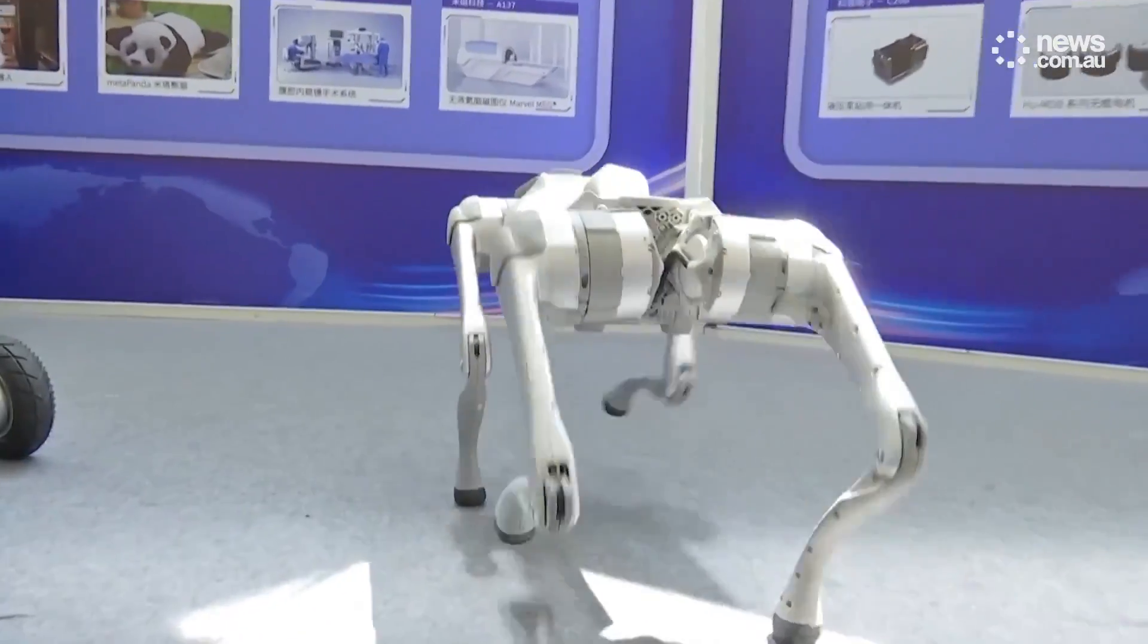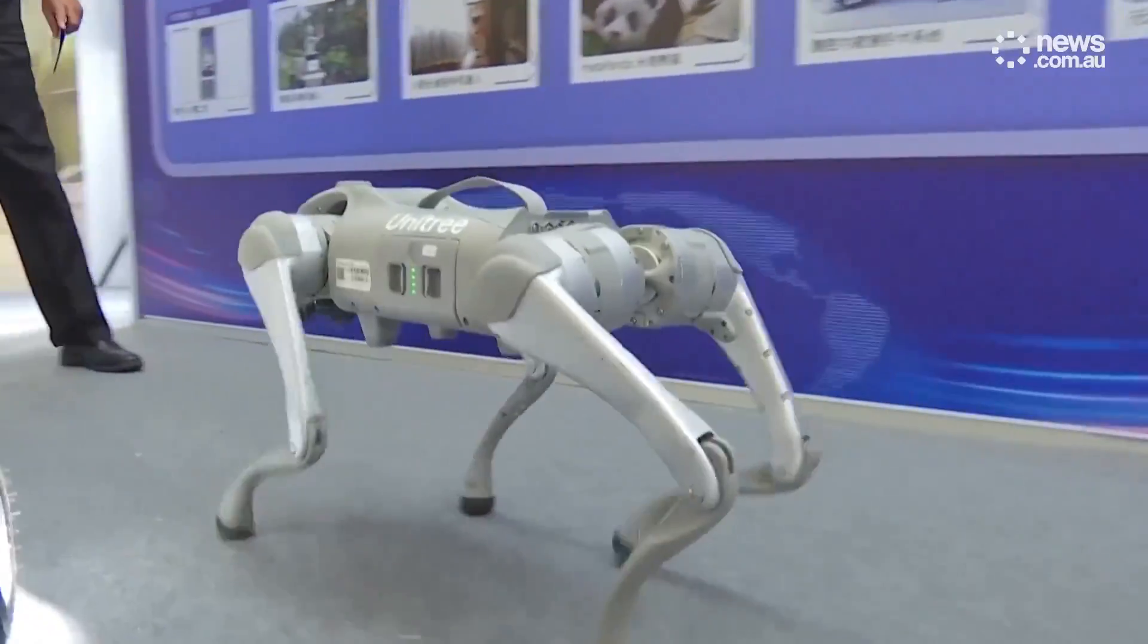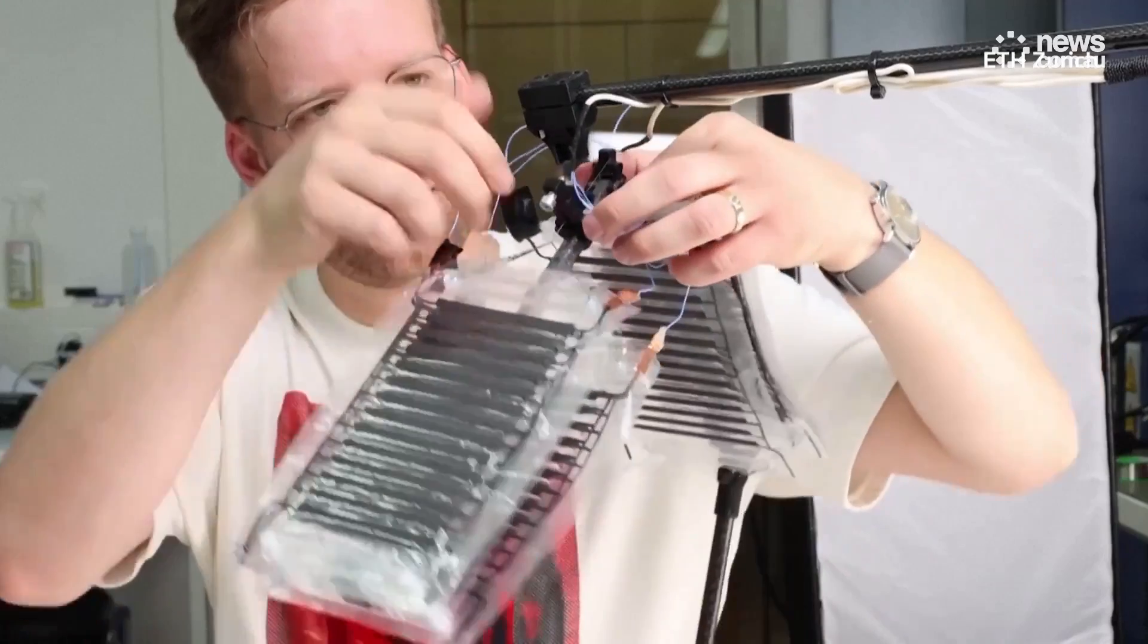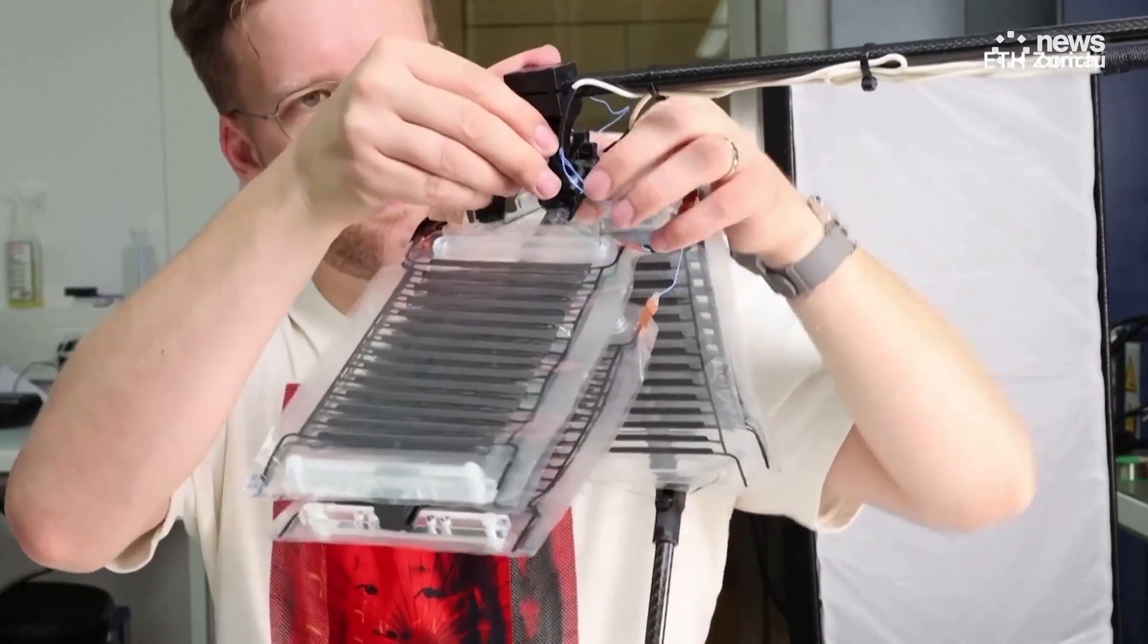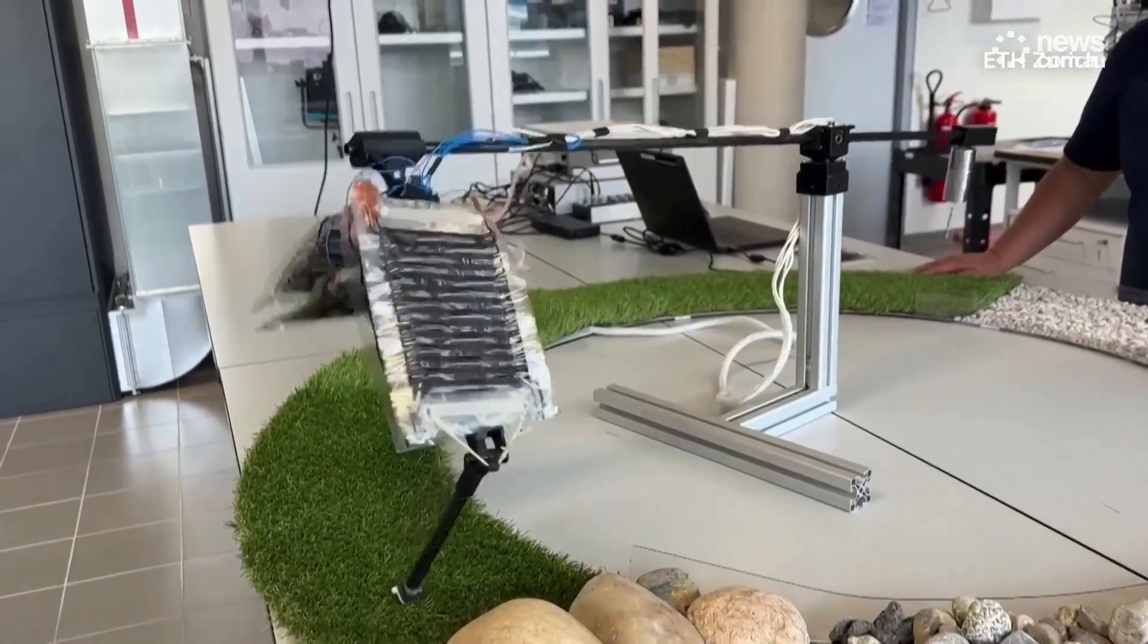Traditional robots typically employ motors to power their movements. Instead, this robotic leg uses artificial electro-hydraulic muscles to mimic the action of a human leg.